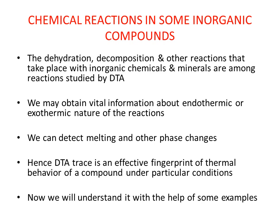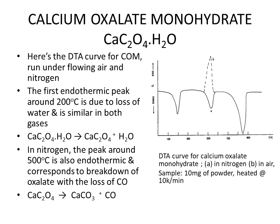The first example is calcium oxalate monohydrate. The DTA curve is shown on the right side. The experiment was run in two different atmospheres, giving two curves: curve A is for the sample run in nitrogen, and curve B is for the sample run in air. Sample quantity was 10 milligrams in powder form, and the heating rate was 10 Kelvin per minute.